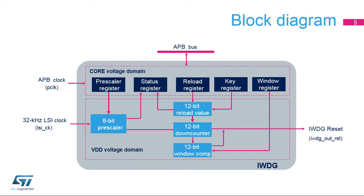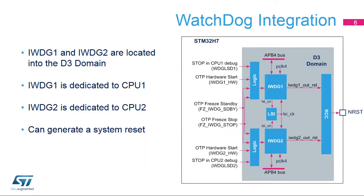A programmable 8-bit prescaler is used to divide the LSI oscillator frequency. The 12-bit downcounter defines the timeout value. The STM32-H7 microcontroller includes two Independent Watchdogs, or IWDGs.